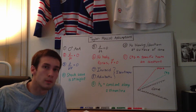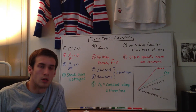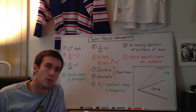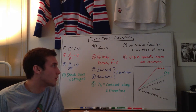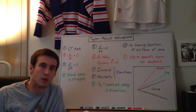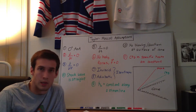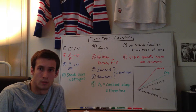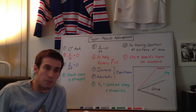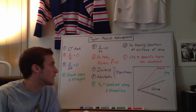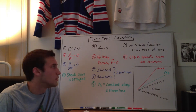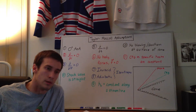Hey everyone. In this video, I'll briefly be going over the assumptions that we need to make for the Taylor-McCall conical flow. I think it's important to list out the assumptions, because when most people are solving problems and using equations, they don't realize what the limiting assumptions are of that equation and they end up using it for something that you can't use it for, which can be dangerous. So I think that this is a good stepping stone into the actual derivation.